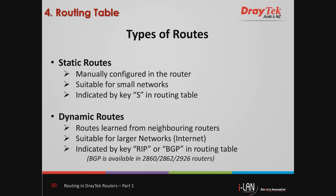Static routes are manually configured in the router. They are suitable for small networks and are usually indicated by the key S in the routing table. For dynamic routes, routes are learned from neighboring routers. They are suitable for larger networks such as the internet and are indicated by key RIP or BGP in the routing table. BGP is now available in the Vigor 2860, 2862, and 2926 routers running the latest firmware. I will now pass to Ash, who will tell you more about static and dynamic routing in DrayTec routers.